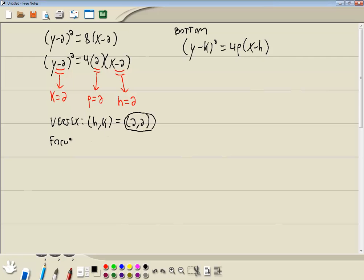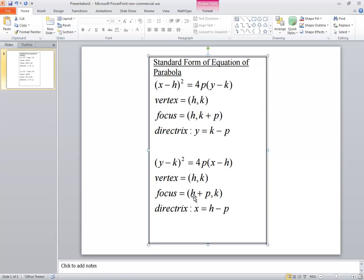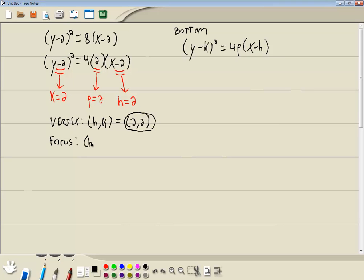Now our focus. Work on the bottom formula. So bottom formula, our focus is h plus p comma k. So h is 2 plus p, which is 2, comma k, which is 2. So that's going to give us 2 plus 2 is 4, 2.